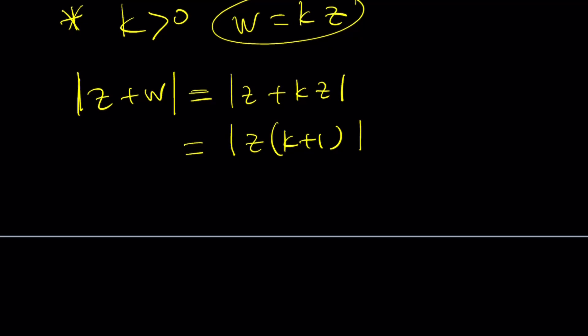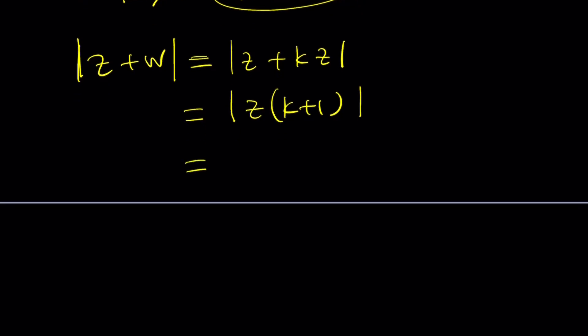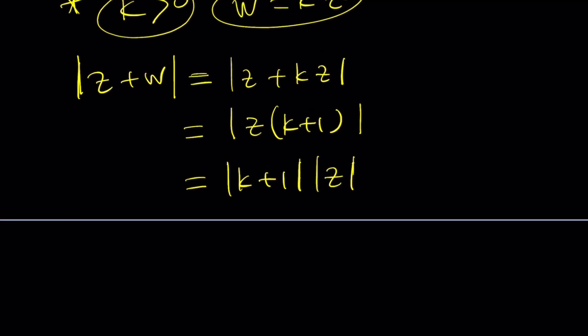And now the product can be split. Sum cannot always be split, but the product can always be split into 2. So the absolute value of K plus 1 times the absolute value of Z. Remember K plus 1 is a positive number because K is positive. K plus 1 is more positive. Some numbers are more positive than others. Remember the animal farm?